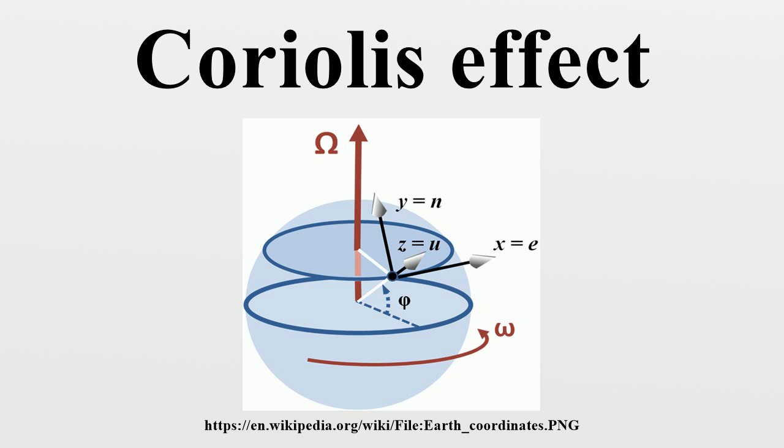Formula: In non-vector terms, at a given rate of rotation of the observer, the magnitude of the Coriolis acceleration of the object is proportional to the velocity of the object and also to the sine of the angle between the direction of movement of the object and the axis of rotation.